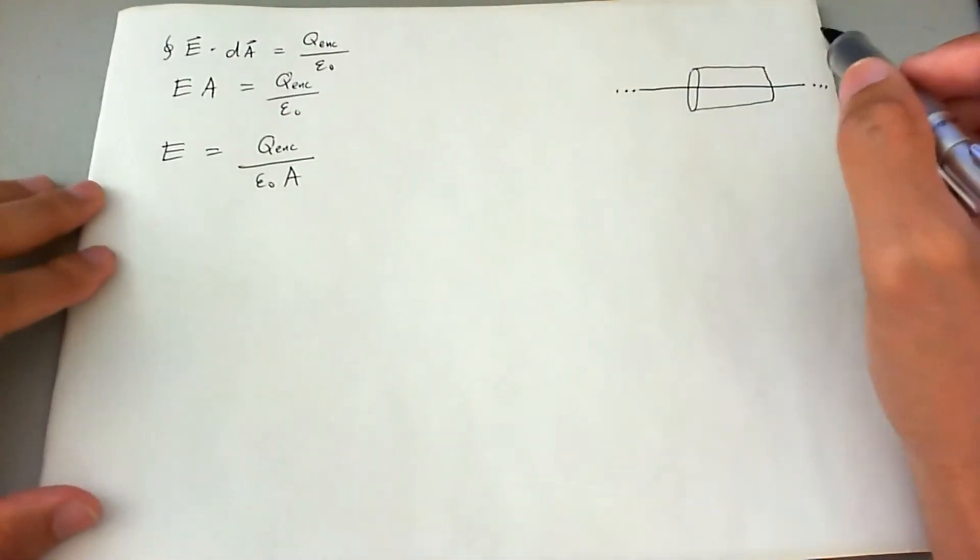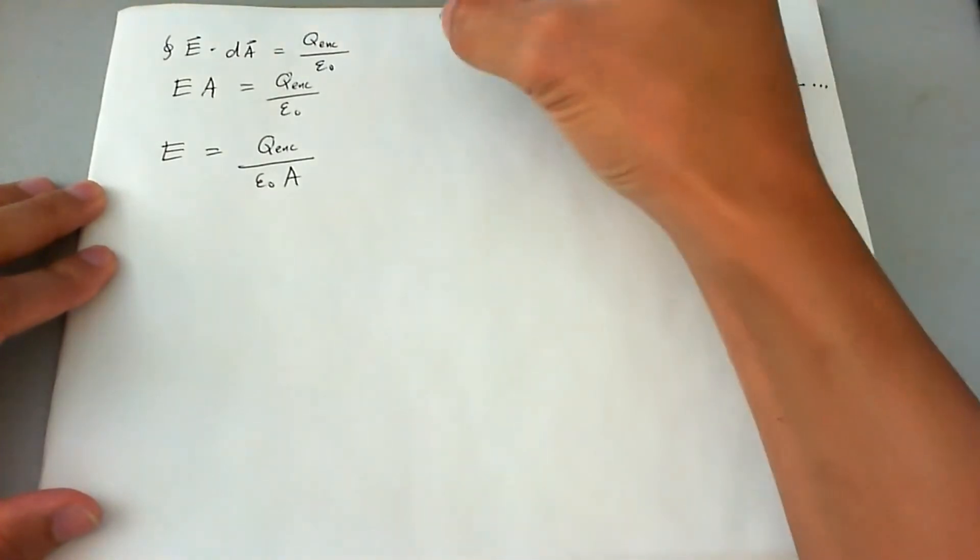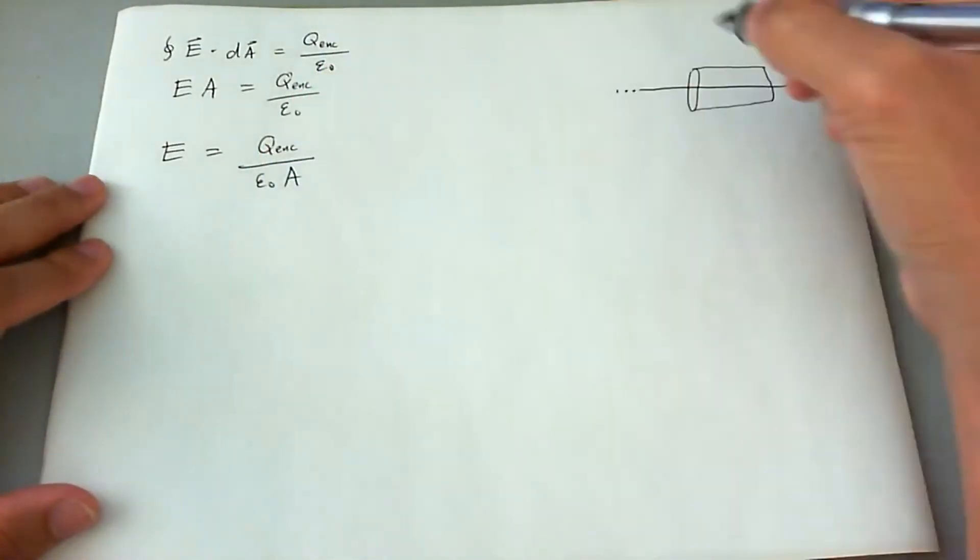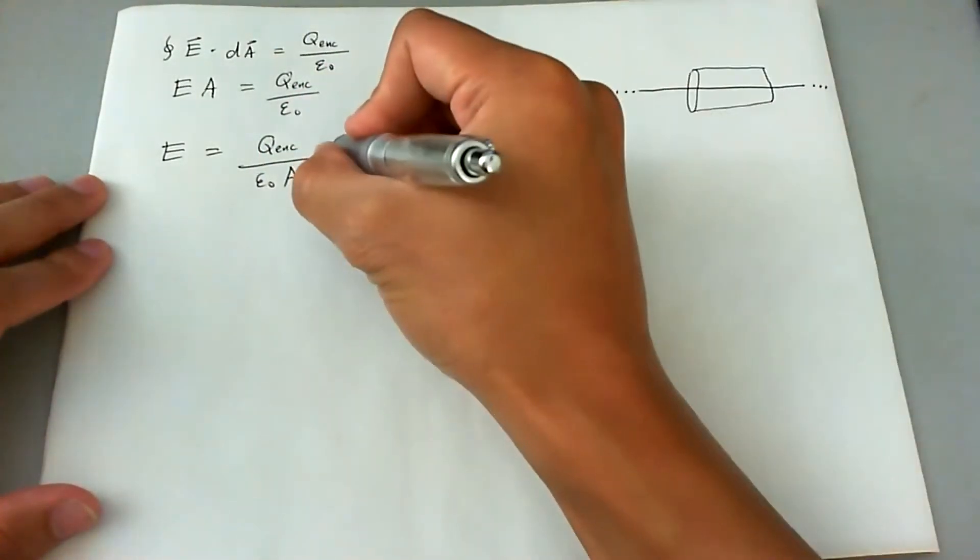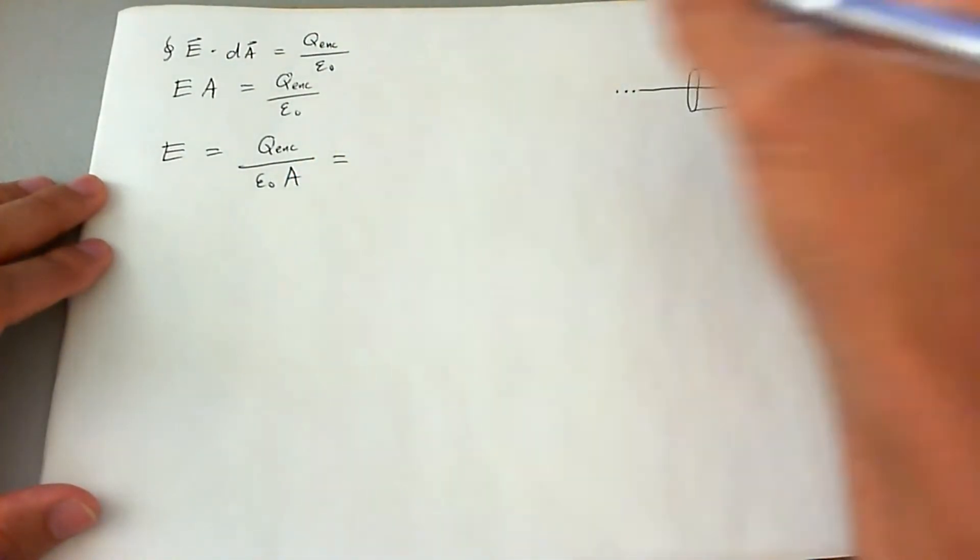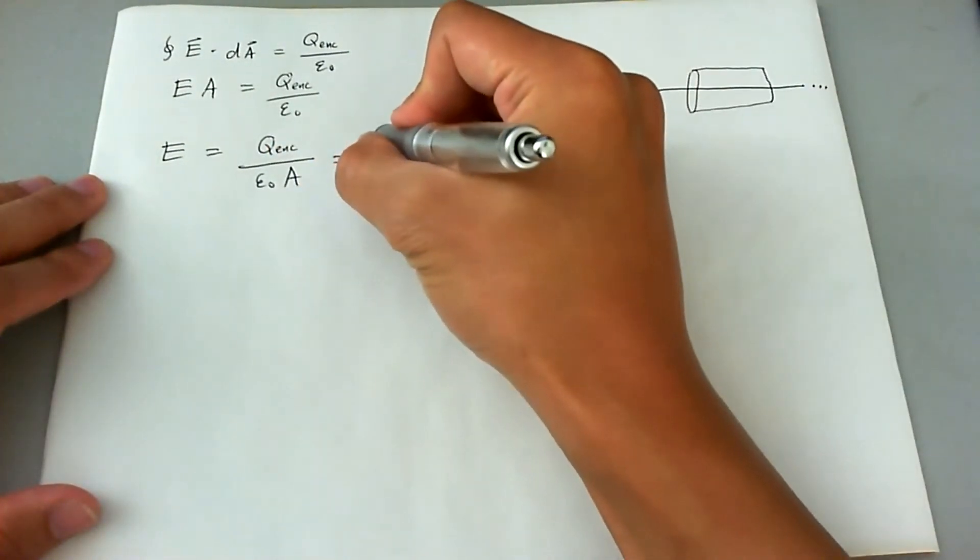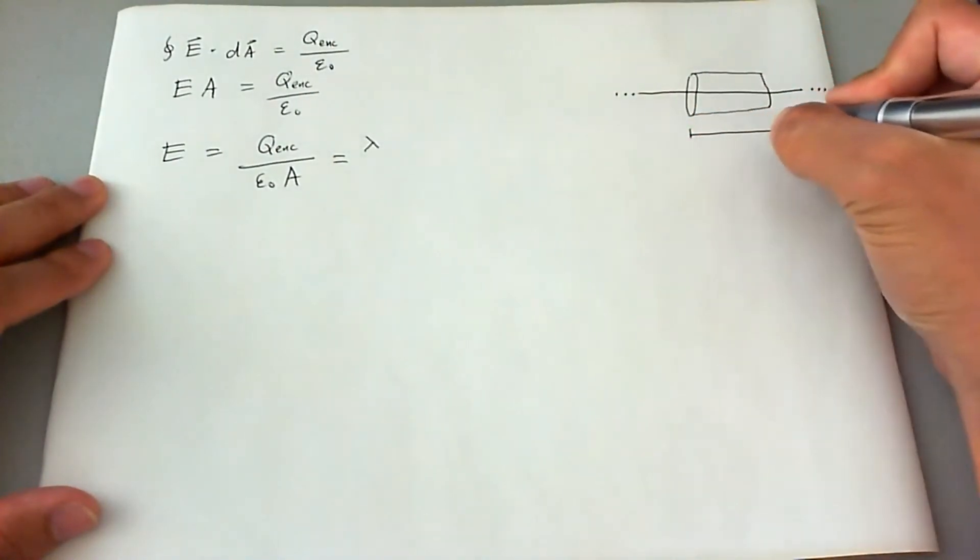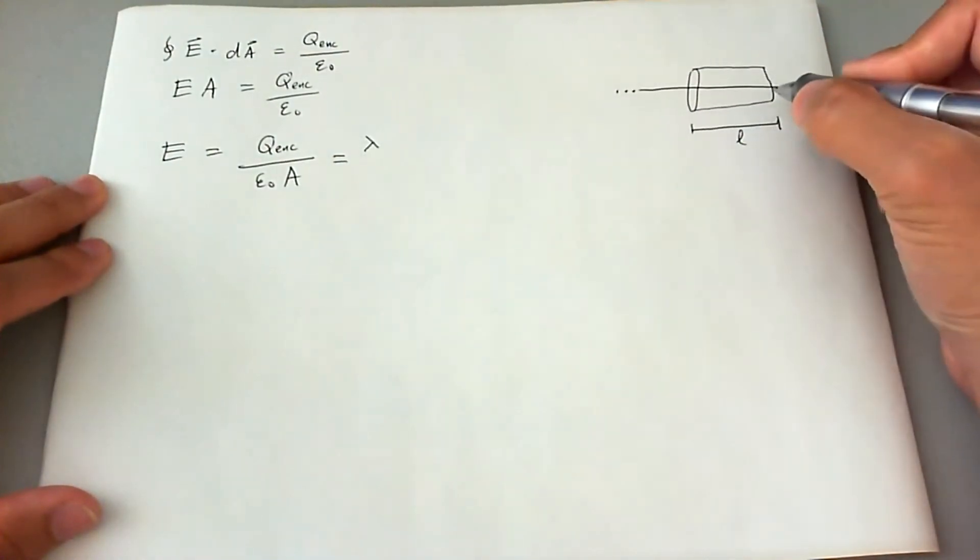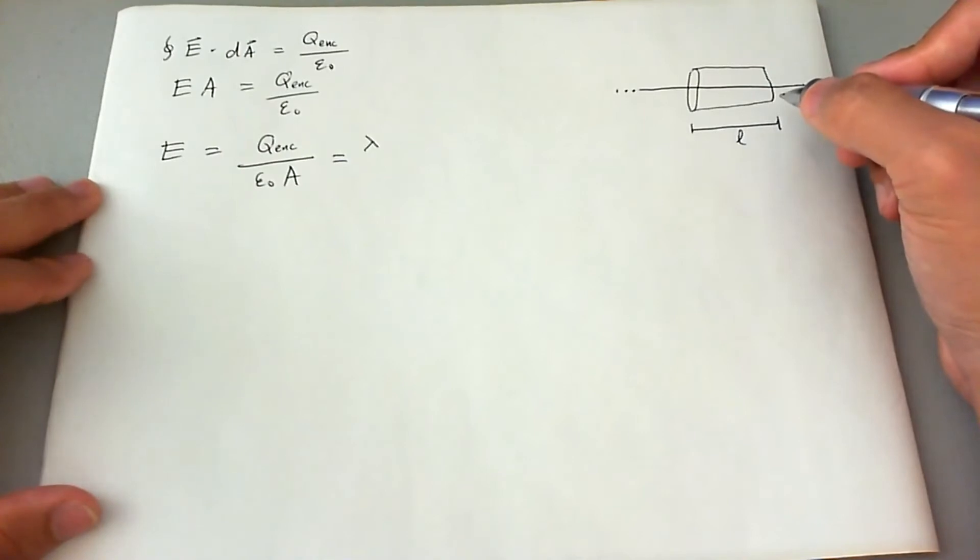So we're not given Q, but we are given a lambda. So therefore, we can say that the Q enclosed is equal to, and we're going to use the charge density equation, Q enclosed is just going to be lambda multiplied by the length of this Gaussian curve that we drew here.